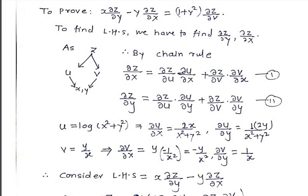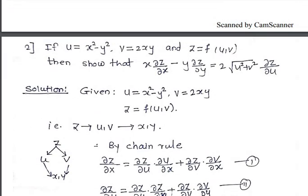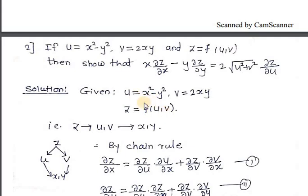Now let us see another example. The second example: u = x² − y², v = 2xy, and z is a given function of u and v. Then show that x ∂z/∂x minus y ∂z/∂y equals 2 times square root of u² + v² times ∂z/∂v. We identify this as a chain rule problem because z is a function of u and v, and u and v are functions of x and y, so z is a composite function of x and y.